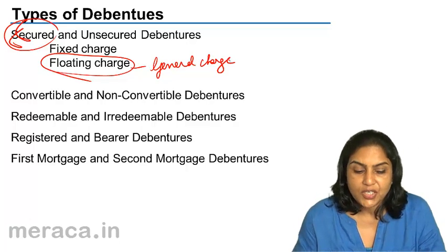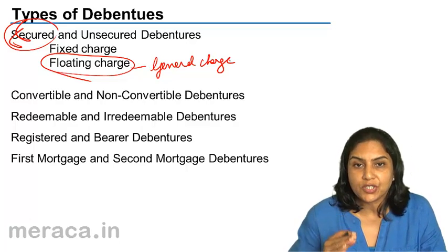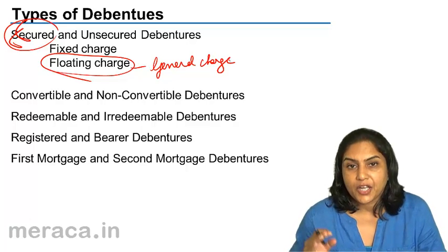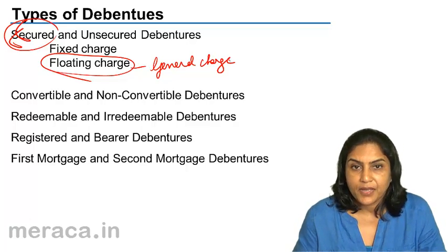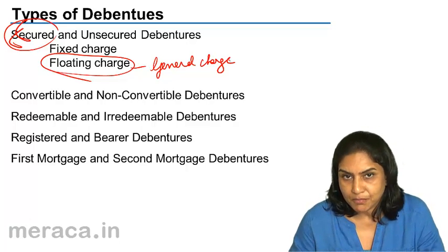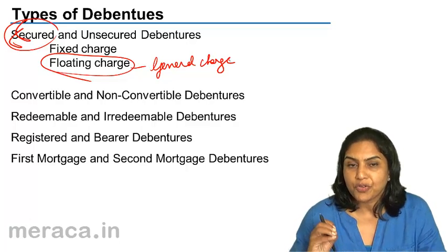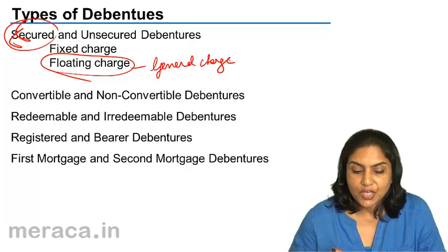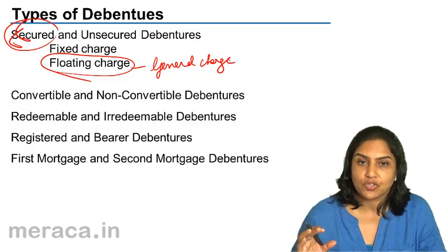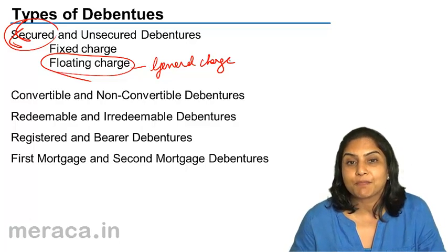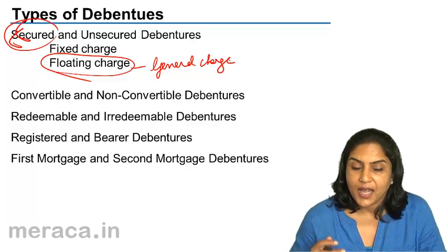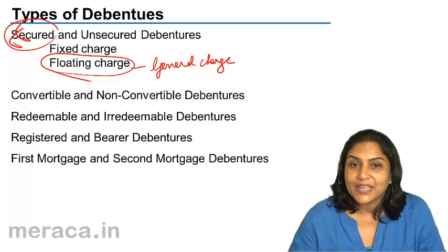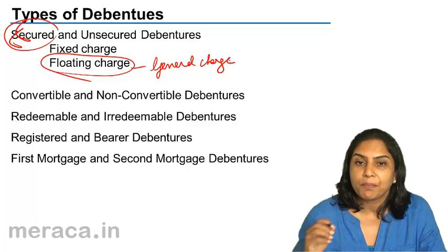What is a fixed charge? If debentures are issued against a particular machinery, a particular factory, or a particular unit, then there is a fixed charge. This means that if the company is to be wound up, the proceeds received from the sale of this machinery, factory, or unit will go first to pay the debenture holders, as only what is left will be available to pay off other liabilities. That is a fixed charge — a charge on a particular asset.